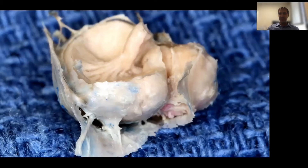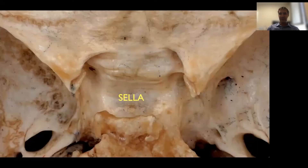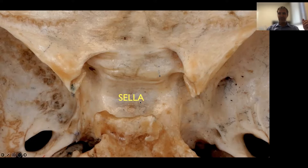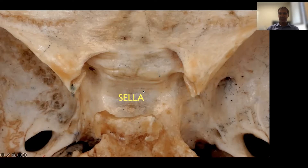Here is another side view of the pituitary gland. The pituitary gland sits on the sella — the cavity of bone on the sphenoid. This is the sphenoid bone seen from above. You see here the lesser wing of the sphenoid and the anterior clinoid process. This is the sella itself. This prominence we call the tuberculum sellae. The bone behind the sella is the dorsum sellae, which has the posterior clinoids on each side.